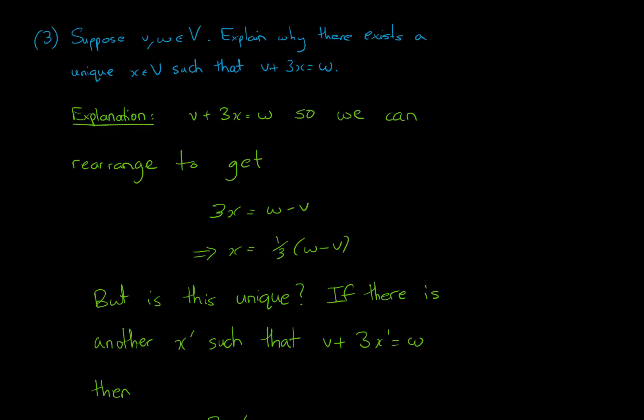Question three: suppose v and w are in a vector space, explain why there exists a unique x in that vector space satisfying the equation v + 3x = w. Simple rearrangement of the equation will give us x = ⅓(w − v).